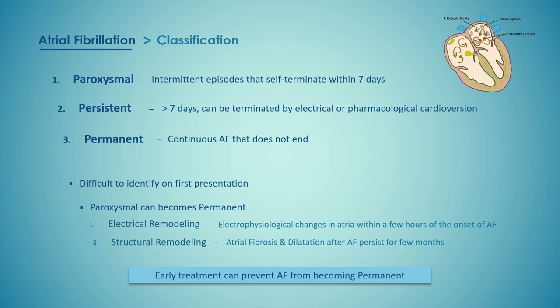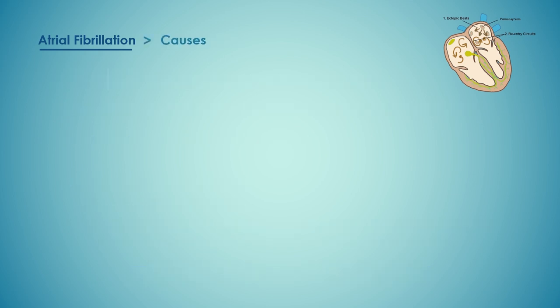Early treatment of AF can sometimes prevent the arrhythmia from becoming persistent. Perform an ECG on everyone with an irregular pulse, and consider 24-hour further monitoring in patients with dizziness, faints, or palpitations to exclude atrial fibrillation and other arrhythmias if the ECG is unremarkable.